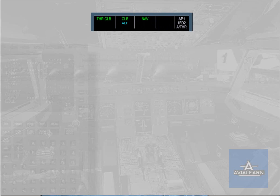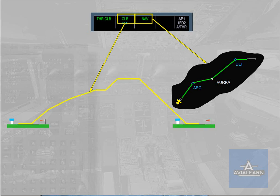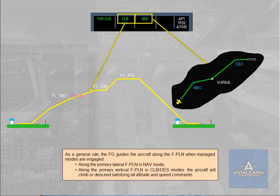As a general rule, the FG guides the aircraft along the flight plan when managed modes are engaged: along the primary lateral flight plan in navigation mode, and along the primary vertical flight plan in climb and descent modes. The aircraft will climb or descend satisfying all altitude and speed constraints.